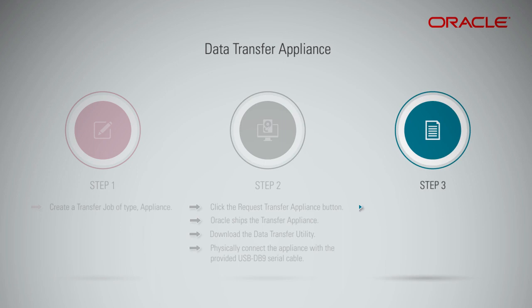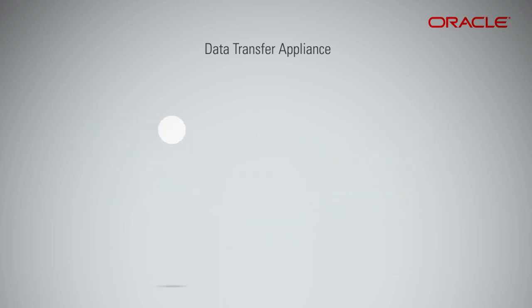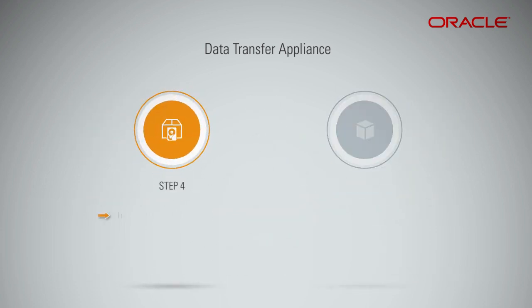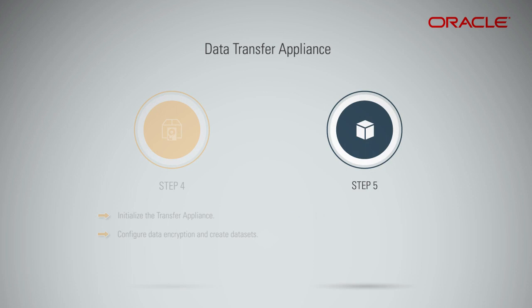Step 3 — configure the transfer appliance's networking and then physically connect the appliance to your network. Step 4 — initialize the transfer appliance, configure data encryption, and create data sets. Step 5 — copy your data to the appliance using normal file system tools. Then lock the transfer appliance and ship the appliance back to the Oracle Transfer Site.